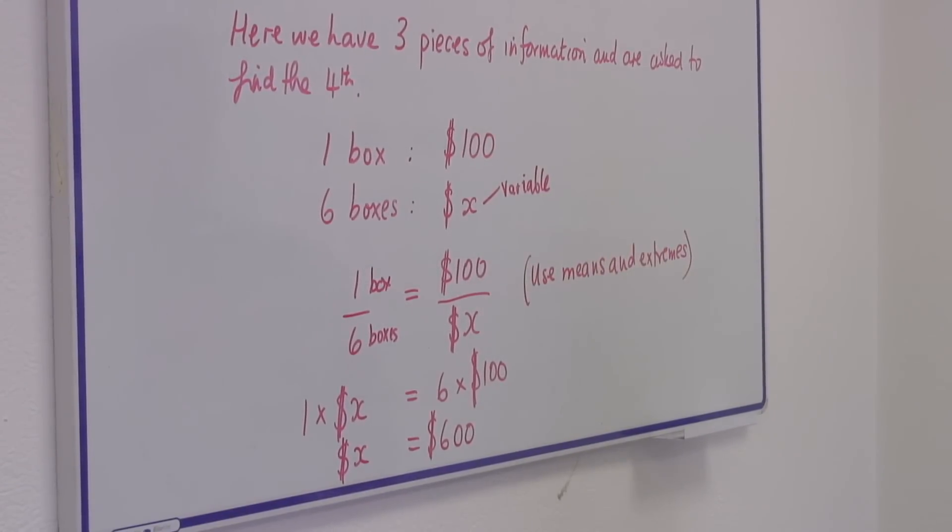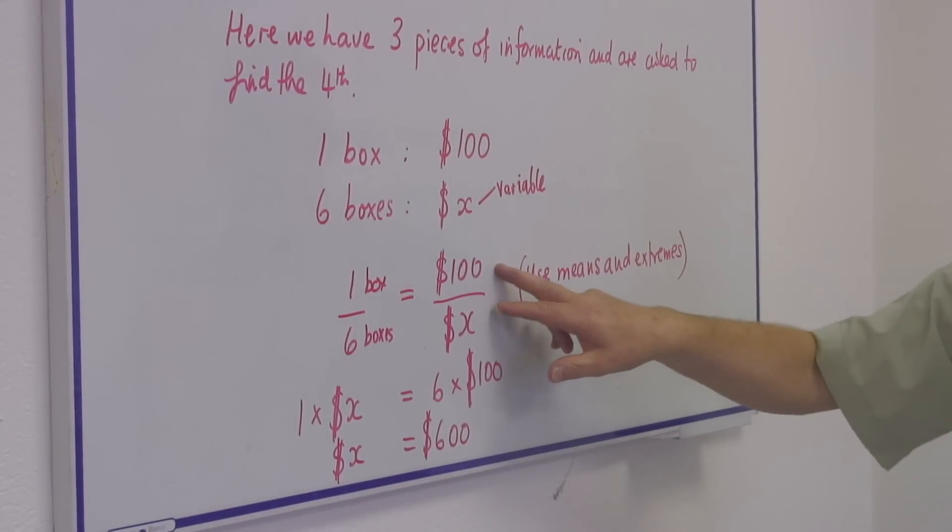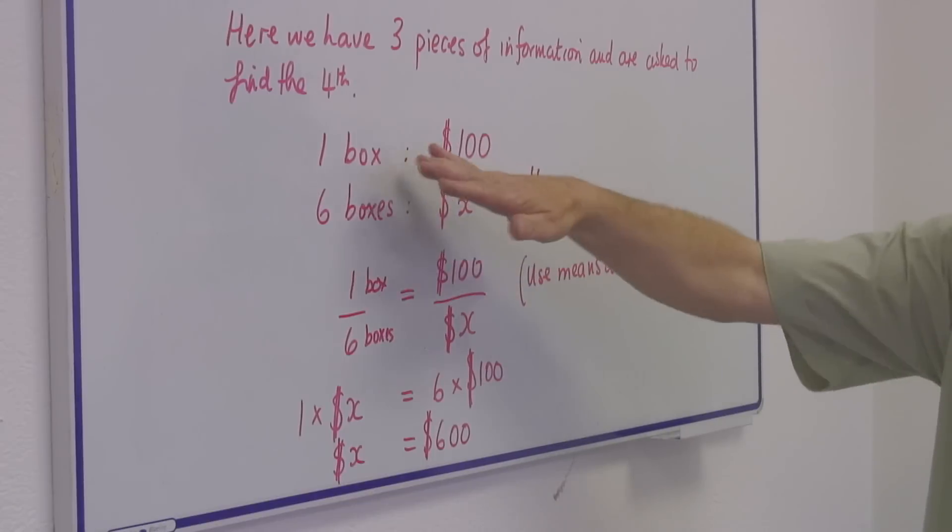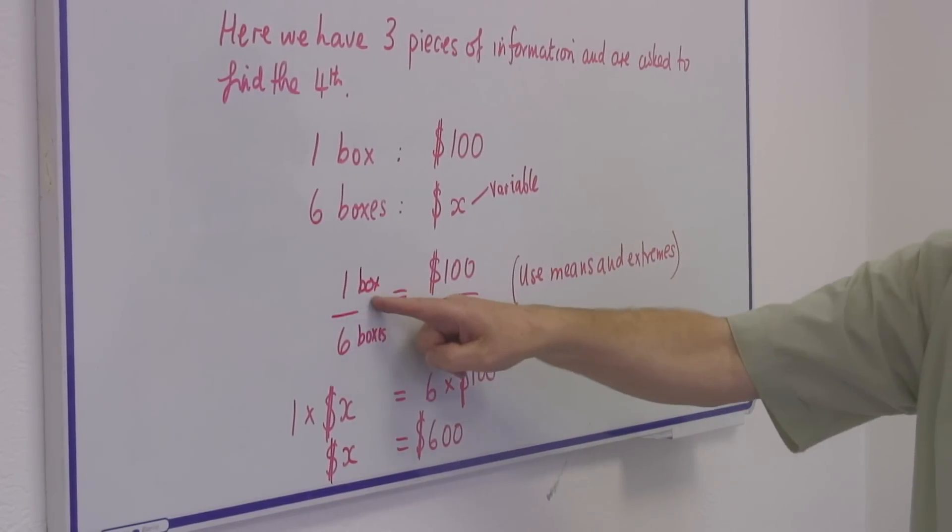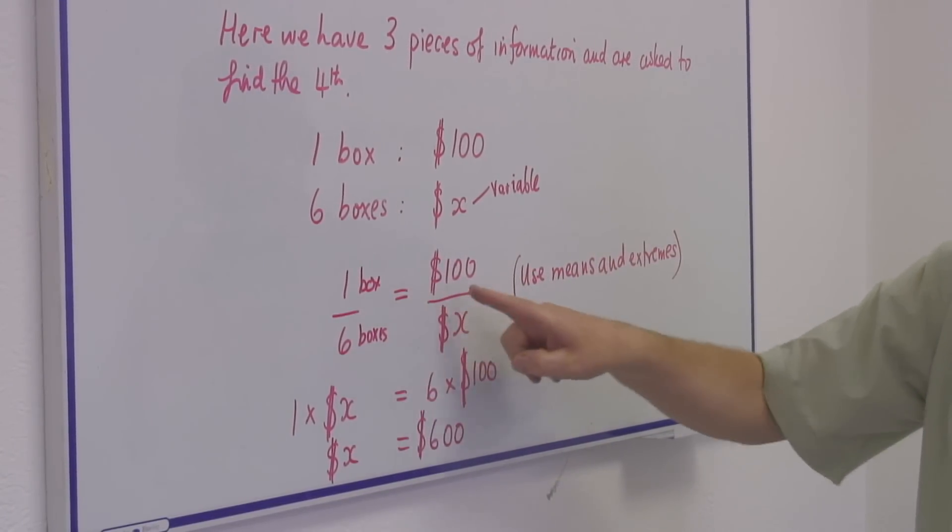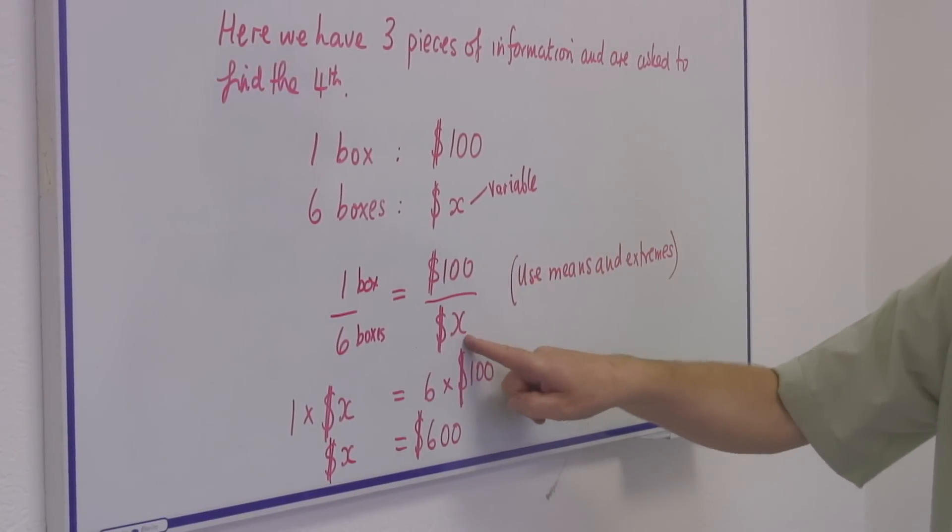Now we can, with our proportion here, write, using these proportions, one box over six boxes equals $100 over x dollars.